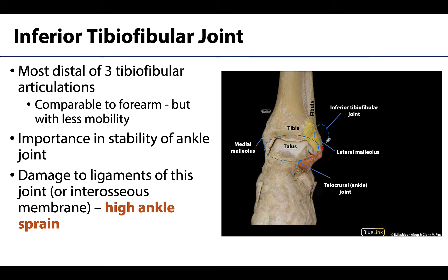However, the integrity of the inferior tibiofibular joint is essential in the stability of the ankle joint just distal to it. This joint serves to keep the lateral malleolus of the fibula firmly against the lateral surface of the talus. Damage to the ligaments associated with this joint — like the anterior tibiofibular ligament — or even the distal portions of the interosseous membrane, is often referred to as a high ankle sprain.